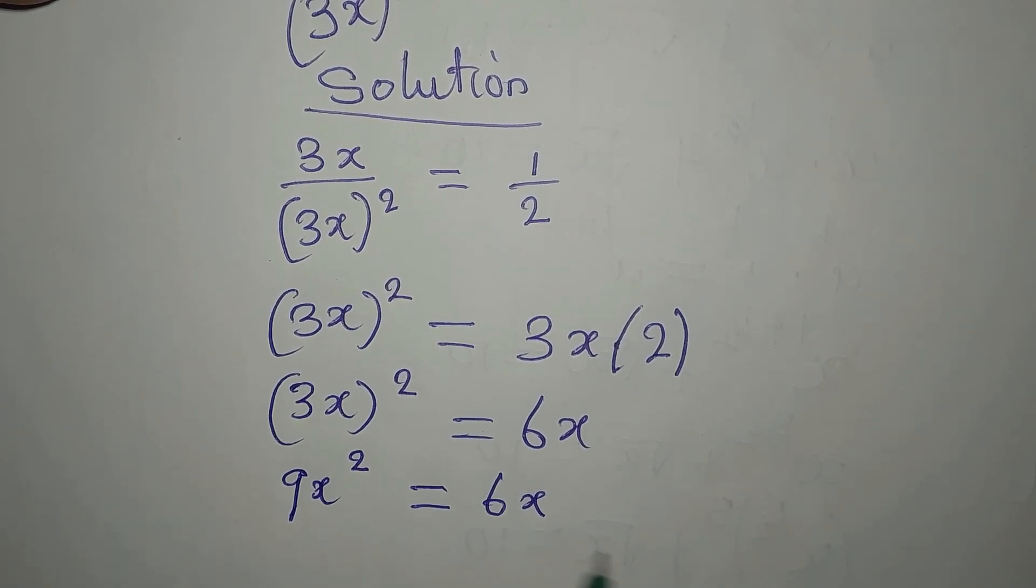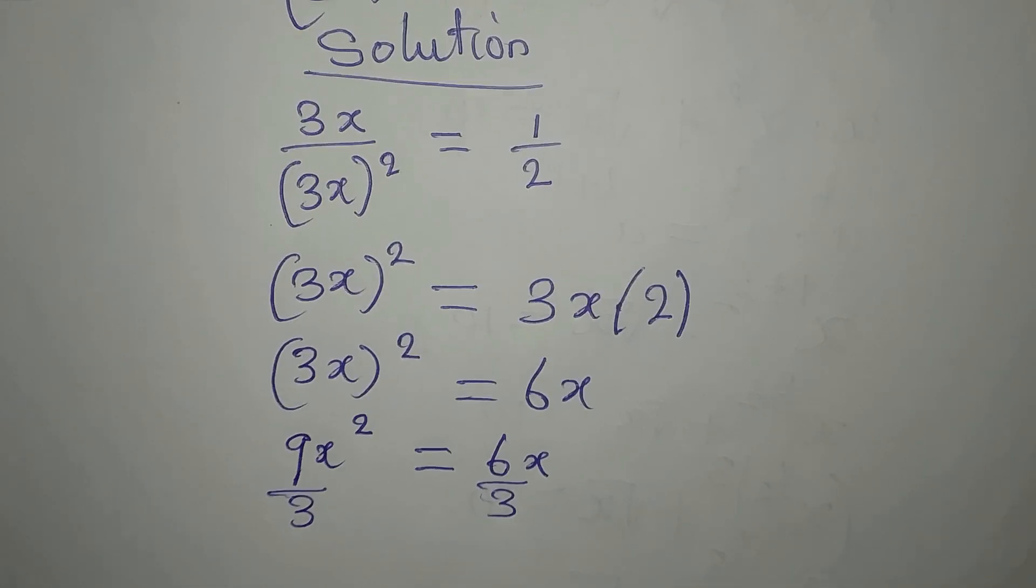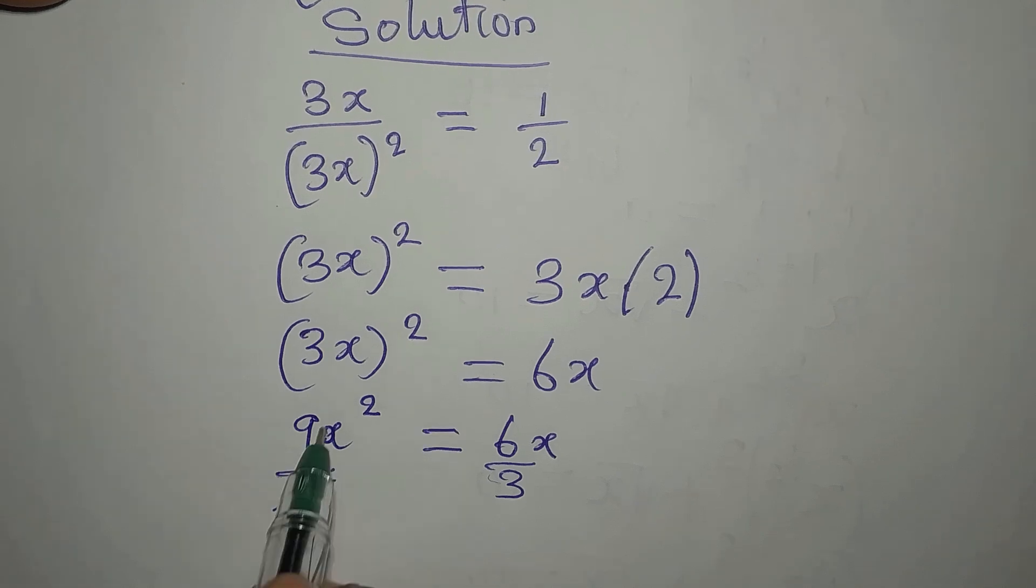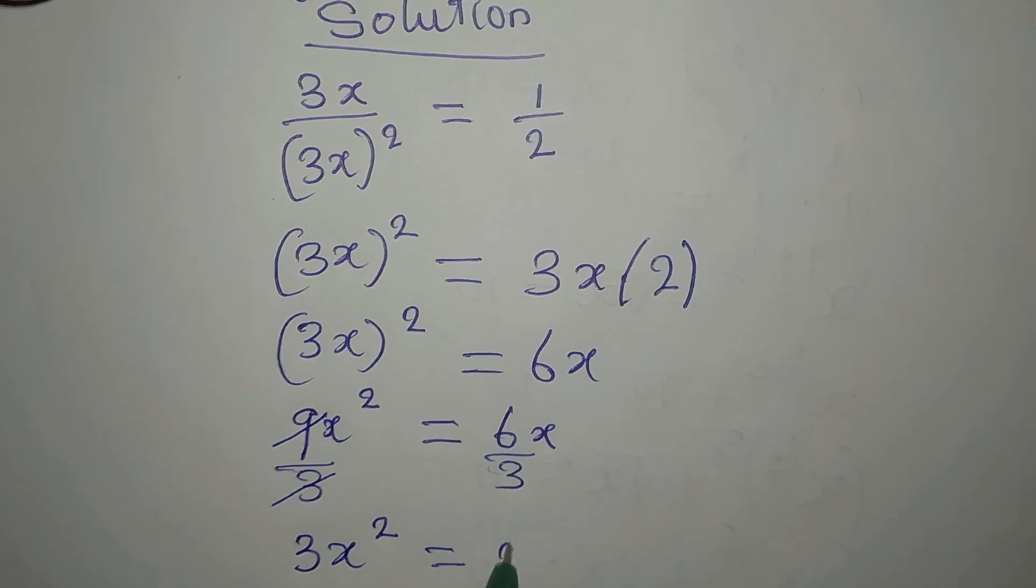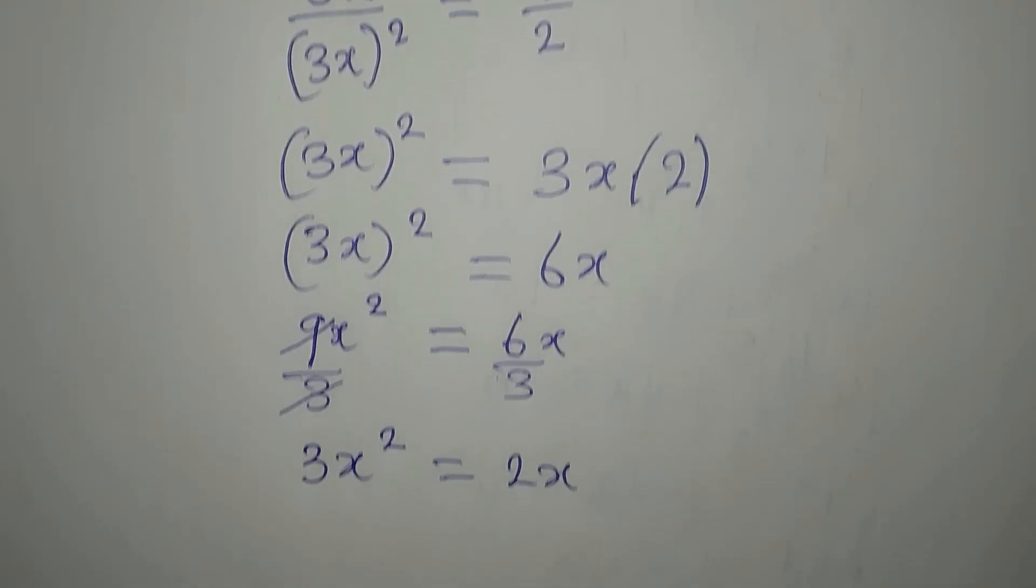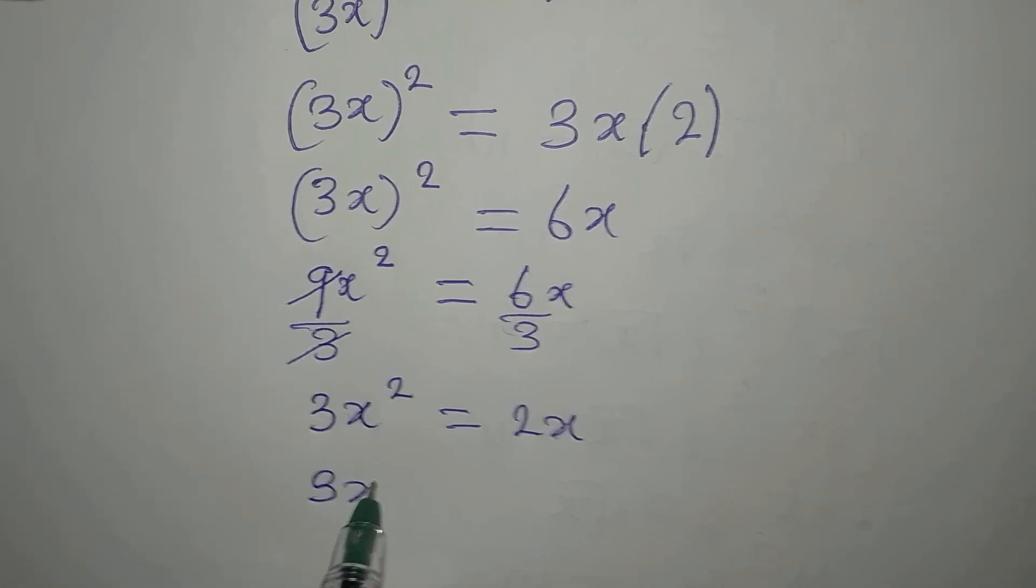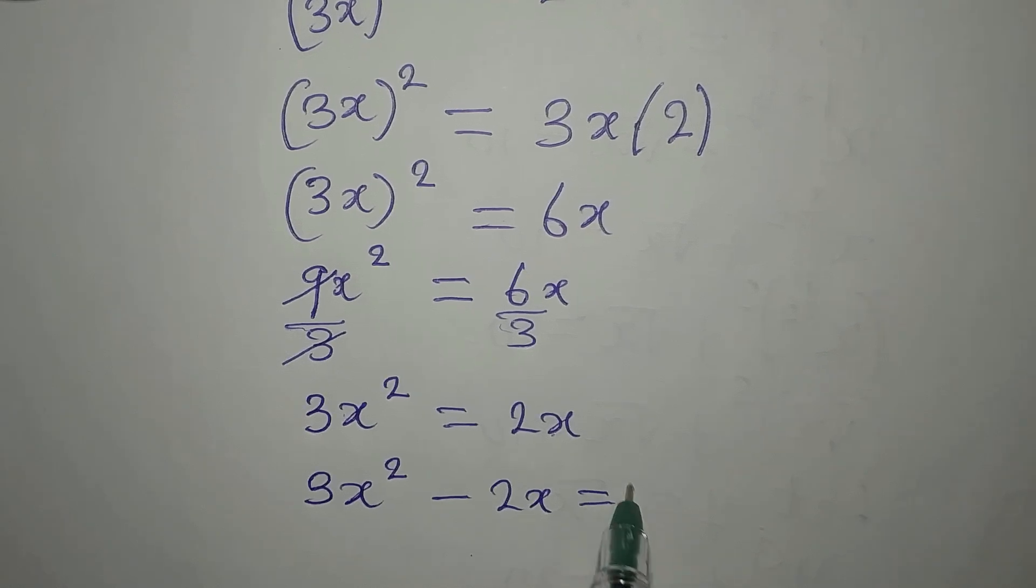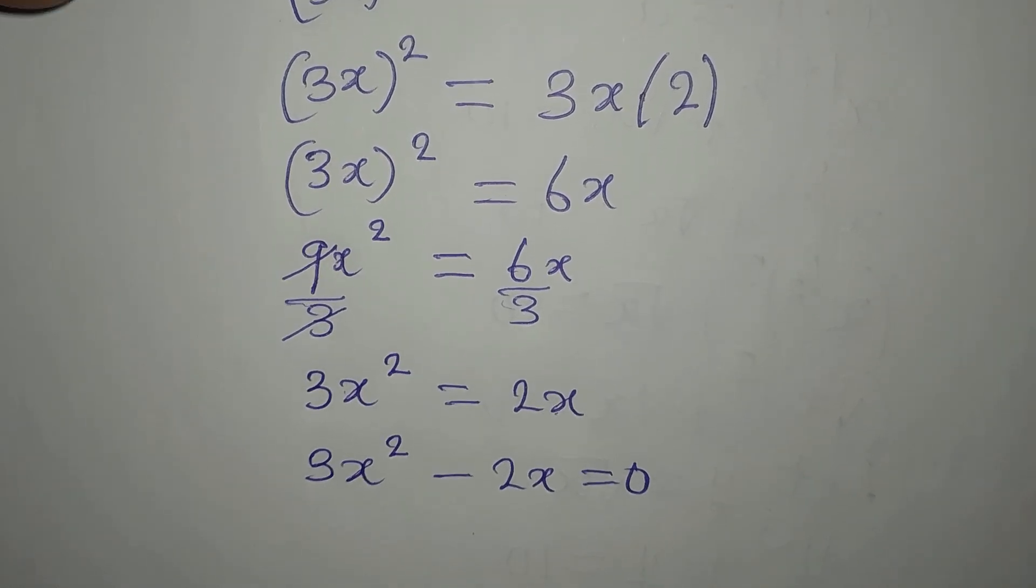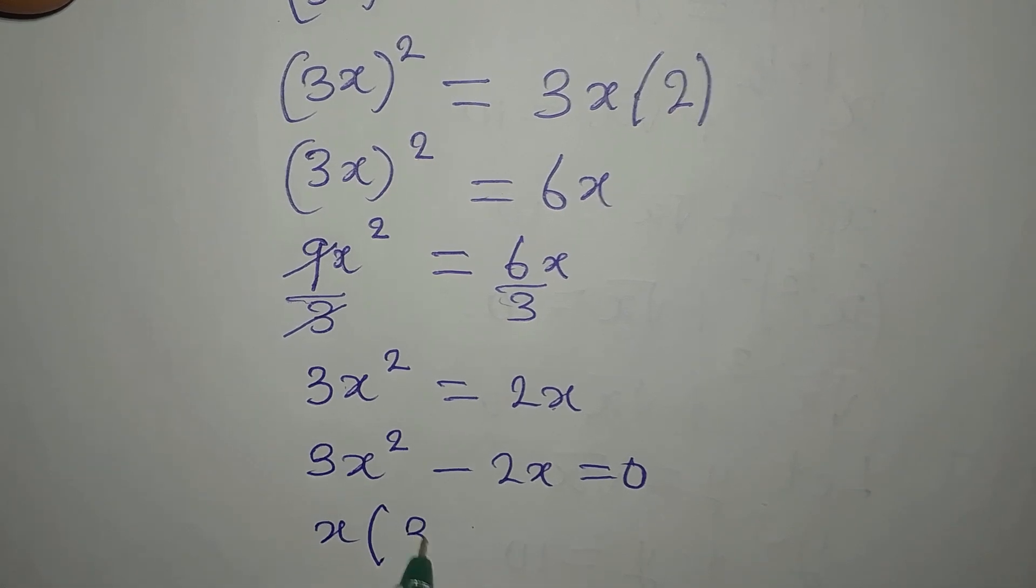You can decide to reduce this equation because 3 is a factor on both sides. We have 3x squared equals 2x. Now bring this to the left, so we have 3x squared minus 2x equals zero.